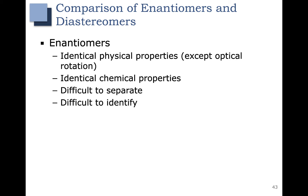Enantiomers will also have identical chemical properties — by chemical properties I mean reactions, so they will react the same way. Enantiomers are also difficult to separate and difficult to identify. If you have one enantiomer versus the other, it's hard to tell them apart and separate them from each other if you have a mixture.